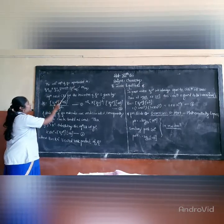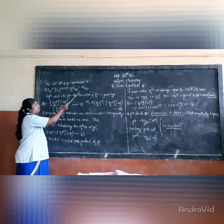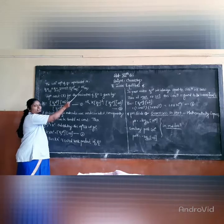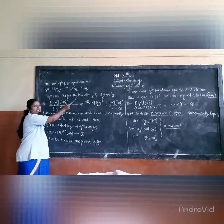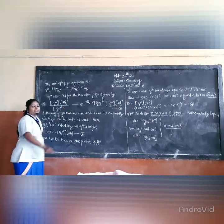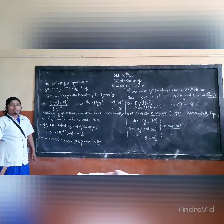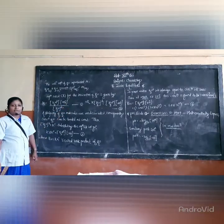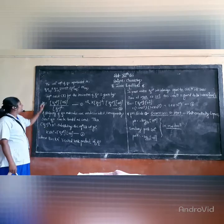The first is the conjugated acid, and the second is the conjugated base. Together they form a conjugated acid-base pair.